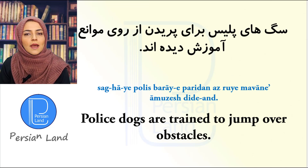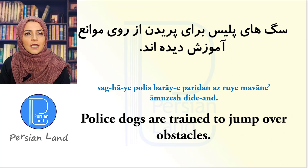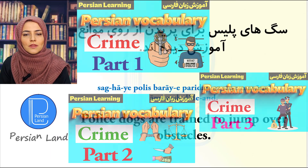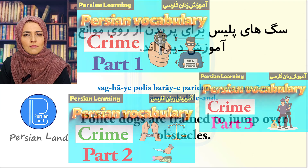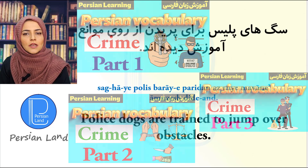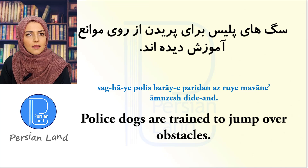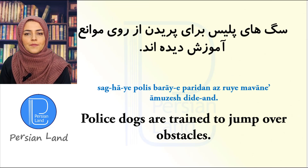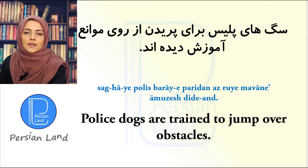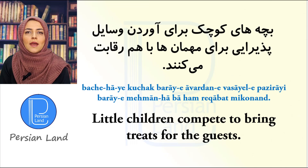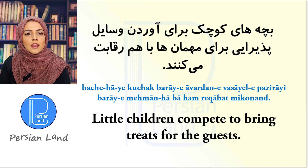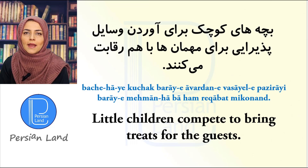You can watch my clips about crime — I have four clips about words in Farsi related to crime. پریدن means 'jump over'. موانع — the singular form is مانع and the plural is موانع — means 'obstacles'. مجاور means 'to be trained'.